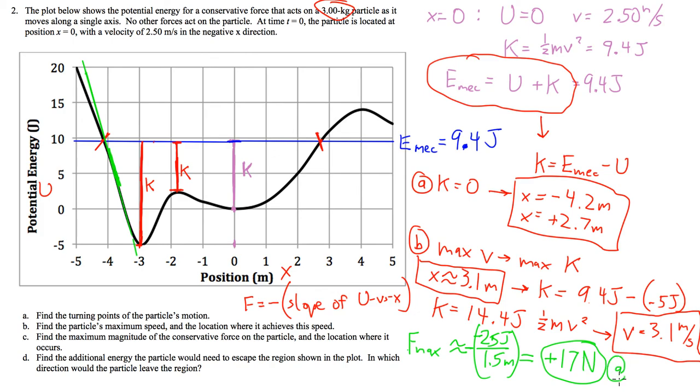So that's about right. And it occurs at, I don't know, let's say it's tangent right here. So negative 3.8 meters. X equals negative 3.8 meters. Okay. Finally, part D, the additional kinetic energy the particle would need to escape the region shown in the plot, and which direction would lead the region. So what you want to do, basically, imagine adding more kinetic energy raises your mechanical energy.